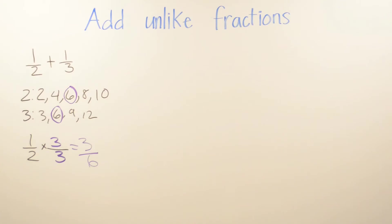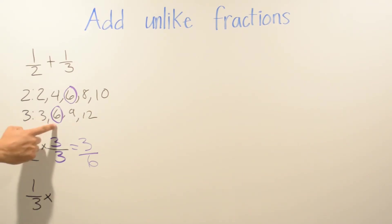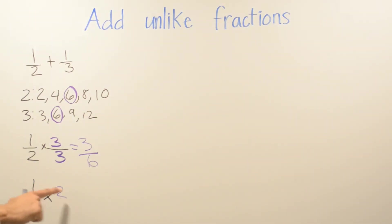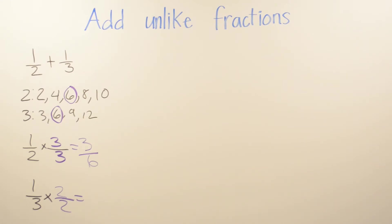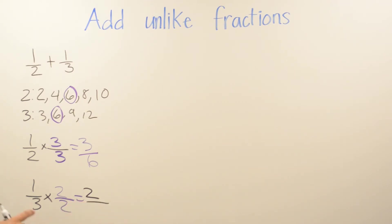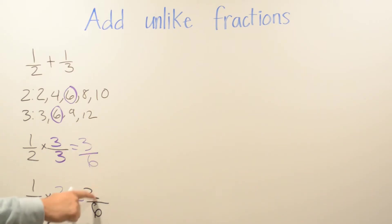Then we do the same thing for one-third. How many times do we multiply to get 6? One, two — so we multiply by 2. Whatever we do on the top we also have to do on the bottom. So 1 times 2 is 2, and 3 times 2 is 6.